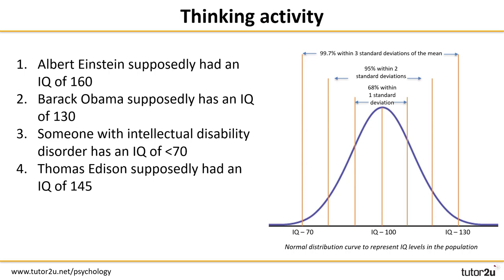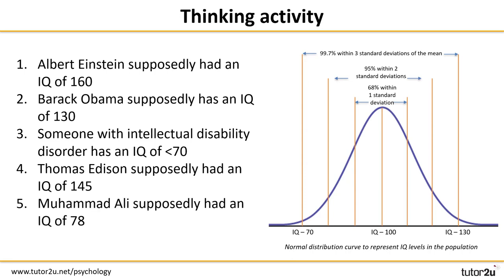Thomas Edison, the famous inventor of things like the light bulb and motion picture cameras, supposedly had an IQ of 145 — another person well above average for IQ. And lastly, Muhammad Ali, one of the most celebrated American boxers of all time, supposedly had an IQ of approximately 78.